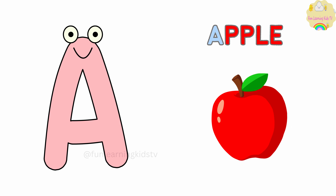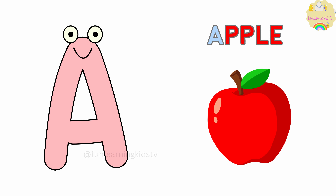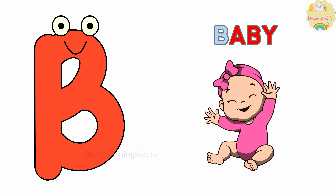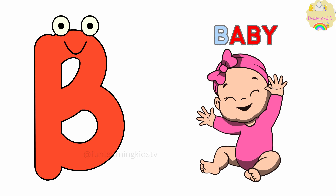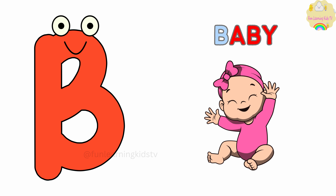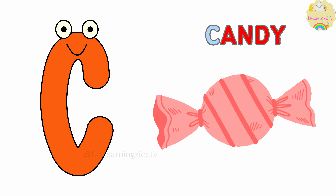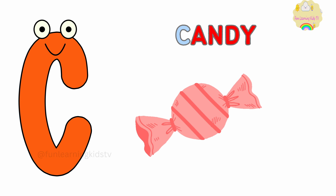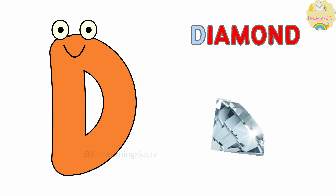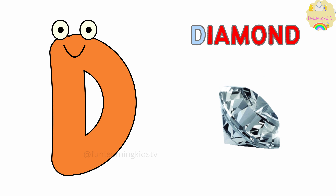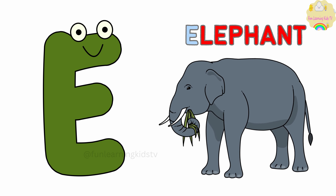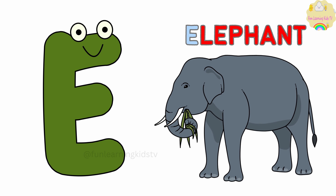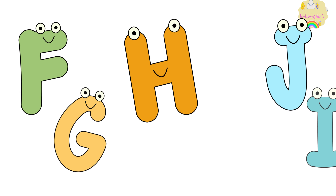A is for Apple. A-A-Apple, A-A-Apple, A-Apple. B is for Baby. B-B-Baby, B-B-Baby, B-Baby. C is for Candy. C-C-Candy, C-C-Candy, C-Candy. D is for Diamond. D-D-Diamond, D-D-Diamond, D-Diamond. E is for Elephant. E-E-Elephant, E-E-Elephant, E-Elephant.